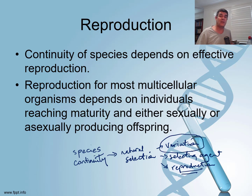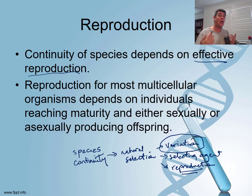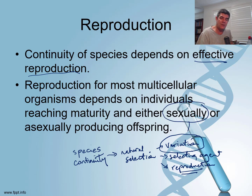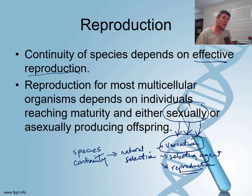We've looked at the process of meiosis and some of the variation that can occur in sexual reproduction, but we also want to focus on some of that variation. Continuity of species obviously depends on effective reproduction — it's no point having the best genes in the world if you don't pass them on to the next generation. So if species are going to continue, they have to pass that genetic code on from generation to generation. Reproduction for most multicellular organisms depends on individuals reaching an age where they are mature and capable of reproduction, either sexually or asexually. Sexual reproduction is the one that introduces more variation, not the least because two separate cells are coming together to form one new cell.